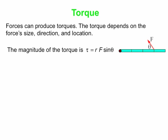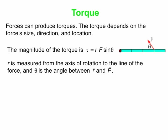The magnitude of the torque: in this case we have a force applied at some angle theta with respect to the rod. The torque is R·F·sinθ. R is the distance measured from the axis of rotation to the line of the force. F is, of course, the force magnitude. And theta is the angle between R and F.